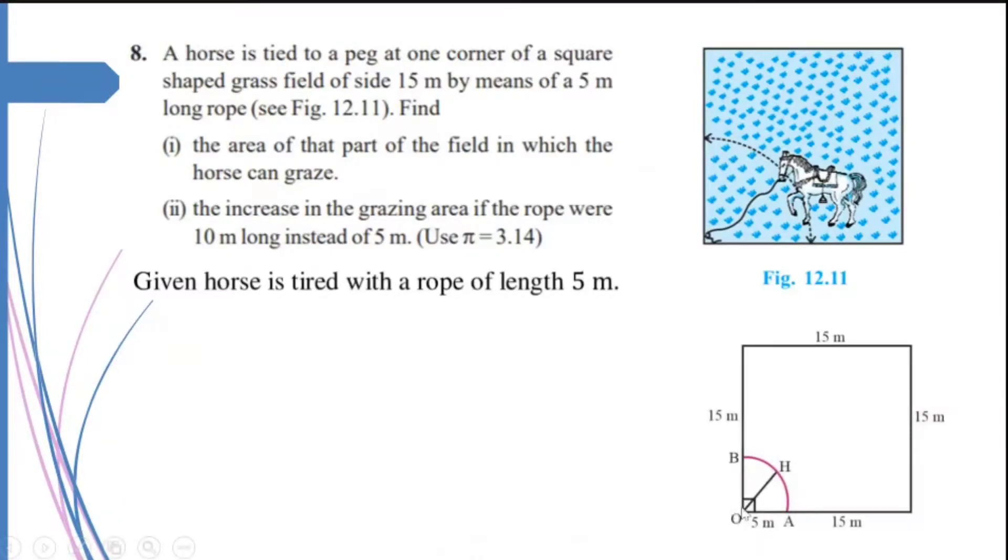if the horse is tied over here and a rope is fixed, the horse will be able to move from here to here. So what is the area it will be able to graze? The area it will be able to graze will be equal to the area of the sector.